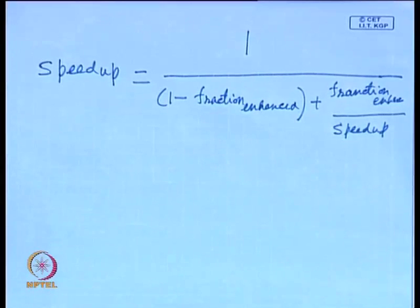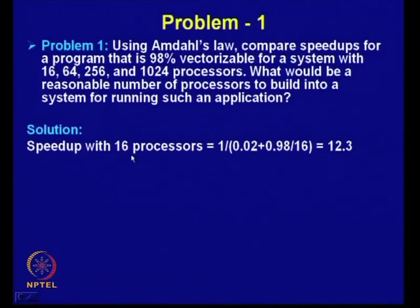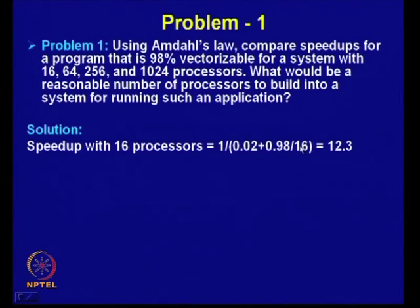Using this expression, for 16 processors the speed-up = 1 / (0.02 + 0.98/16), where 0.02 = 1 - 0.98. Vectorizable means you have a vector processor where you can execute 98 percent in parallel. With 16 processors the speed-up is 12.3. Similarly, for 64 processors you get 28.3, and for 256 processors you get a speed-up of 42.